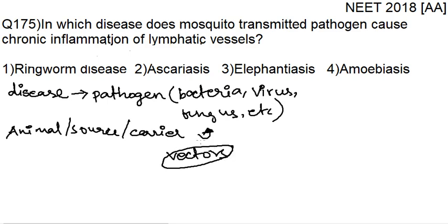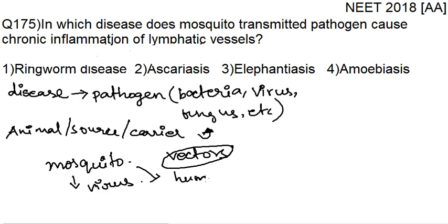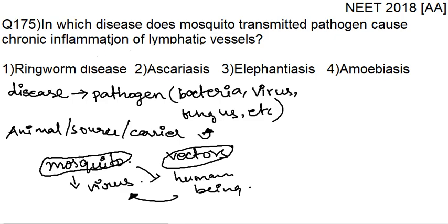What do vectors do? Vectors just carry the bacteria or the virus. When they bite — for example, if the vector is a mosquito and there is a virus in the mosquito's blood — the human being gets infected because the virus enters the human's bloodstream. The mosquito is a carrier; the disease is caused by the virus, not the mosquito. But the mosquito is the source through which the causing agent reaches the human being.